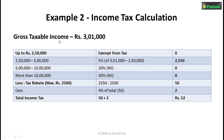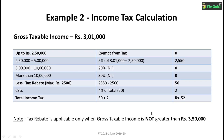The tax rebate is applicable in this example since the gross taxable income is less than or equal to ₹3,50,000. The income tax was ₹2,550, and the maximum tax rebate is ₹2,500, so the rebate reduces the tax to ₹50. The health and education cess at 4% is applied on ₹50, which gives ₹2. So the total income tax comes to ₹52, showing how the tax rebate significantly reduced the tax payable.